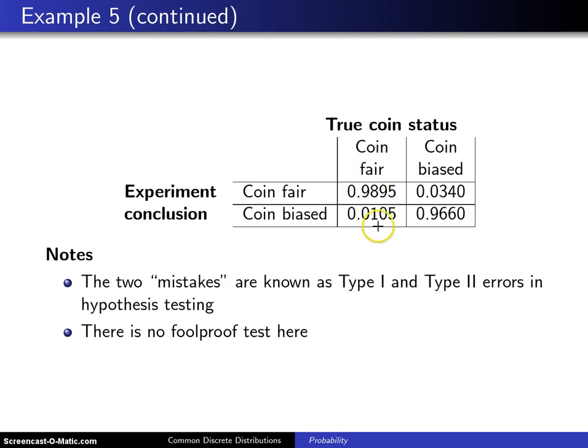Notice that the column sums are both 1 in this case. Here is if you have a fair coin, the probability you will decide it's fair is 0.9895. That's good. That's a high probability. On the other hand, if you have a biased coin, the probability you determine it will be biased is again high. And that's pretty good. But there are two errors here.